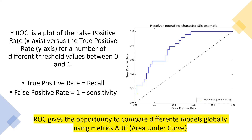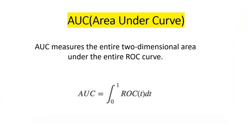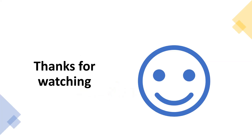The False Positive Rate is known as one minus sensitivity. Comparing ROC and F1 score: F1 score captures the relationship between recall and precision, while the ROC captures the relationship between recall and sensitivity. The ROC gives us the opportunity to compare different models globally using the Area Under the Curve, which is the integral from zero to one under the ROC curve and measures the entire two-dimensional area under the ROC curve. This is very useful for comparing between different models. That's all for the metrics — thanks for watching and see you in the next tutorial.